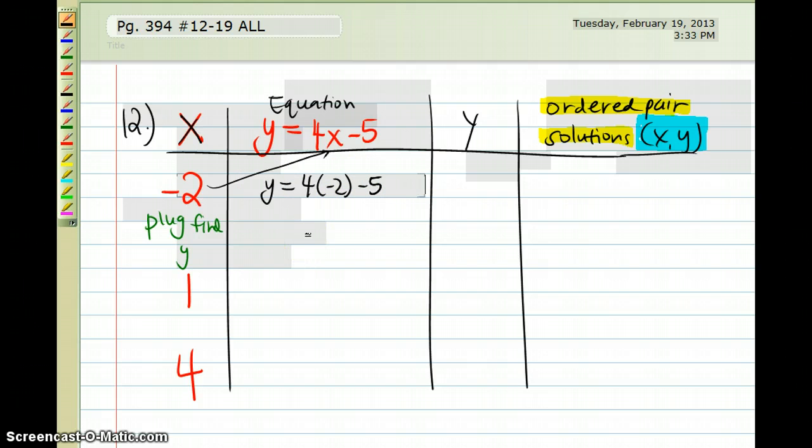I'm going to follow PEMDAS here, multiply 4 negative 2, which is negative 8, subtract 5, giving me negative 8 minus 5, which is negative 13. So I'm going to be getting negative 13 when negative 2 is plugged in into the equation for x. And that's my first solution, so I'm going to write that in blue. My first solution is negative 2 comma negative 13, and I need to put that in a parenthesis.